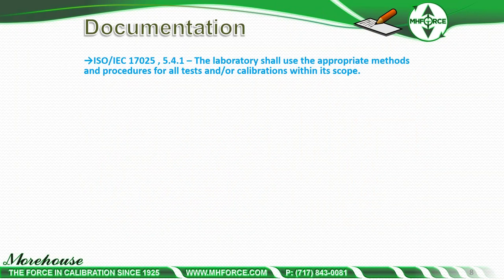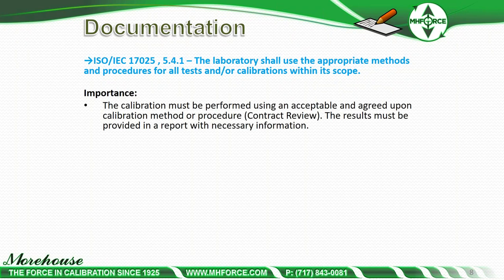A little overview on documentation: ISO 17025 section 5.4.1 states the laboratory shall use the appropriate methods and procedures for all tests and/or calibrations within its scope. The real importance is that calibration must be performed using an acceptable and agreed-upon calibration method or procedure. This is the contract review phase — we should have the email, the conversation, whatever the preference is. And the results must be provided in a report with the necessary information.